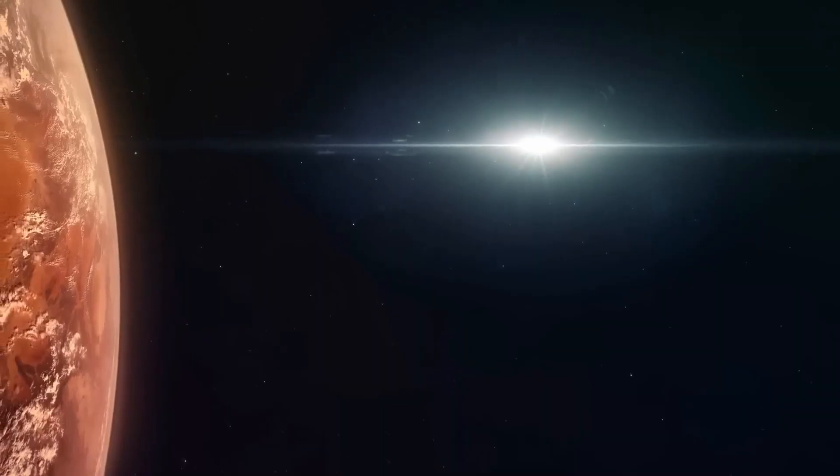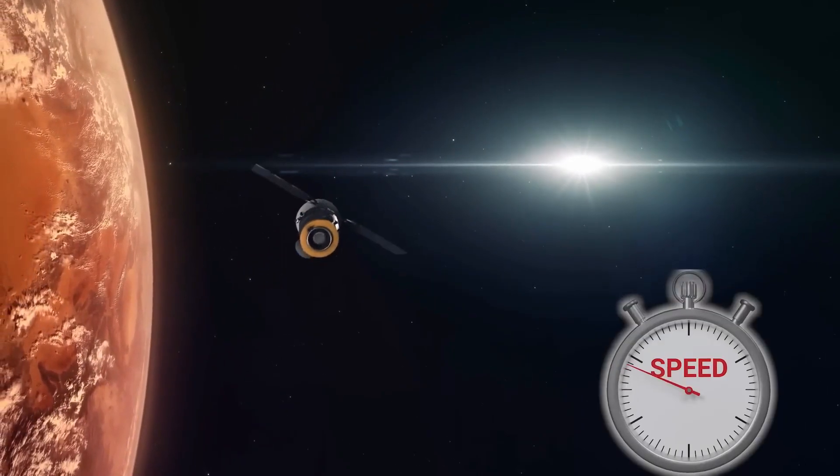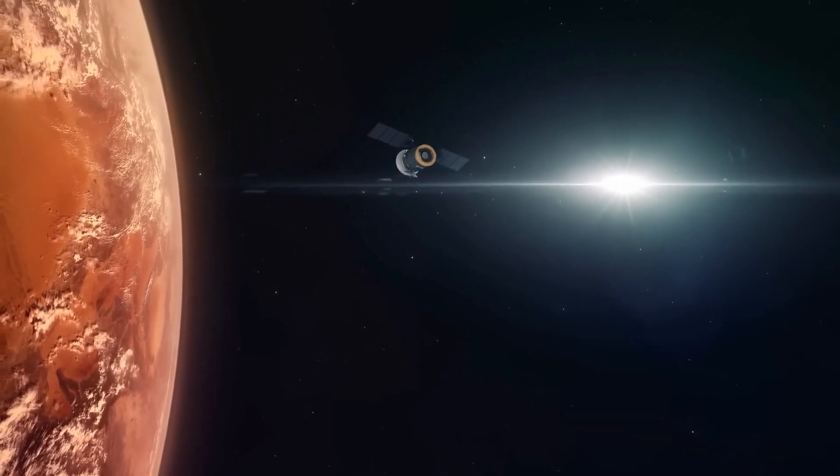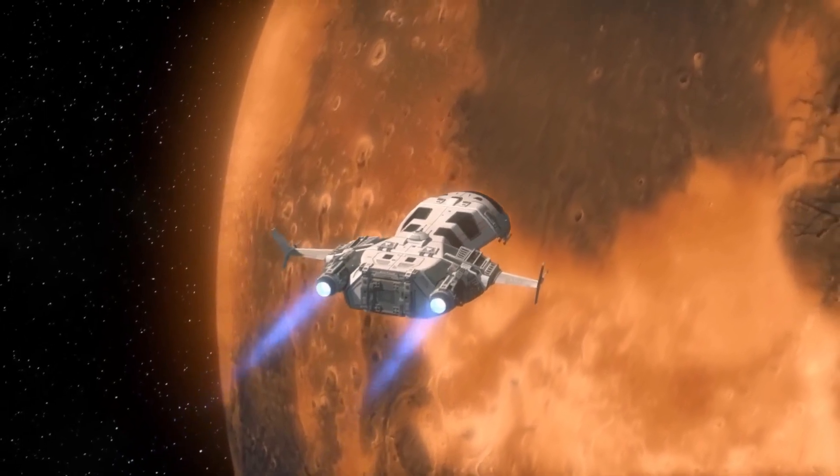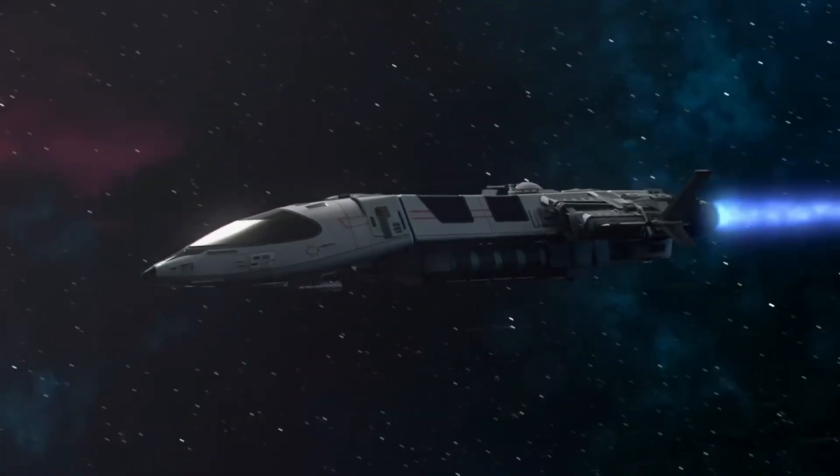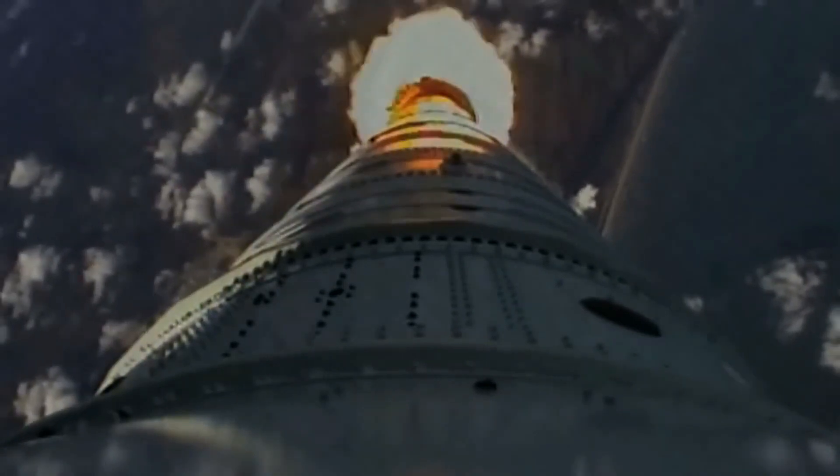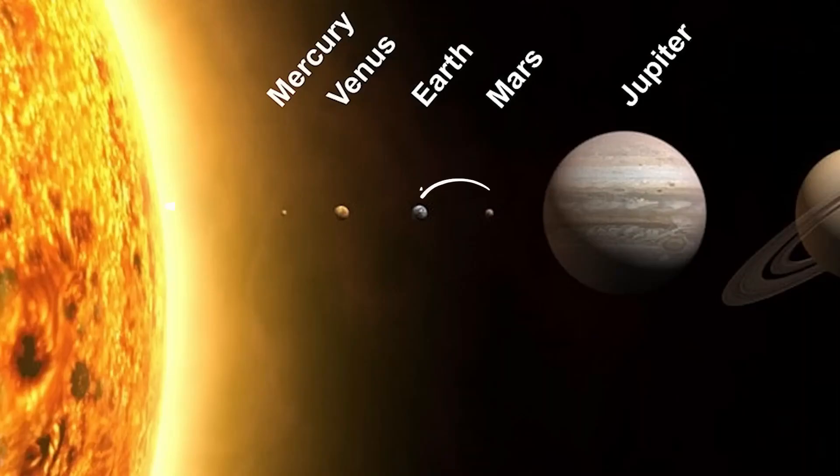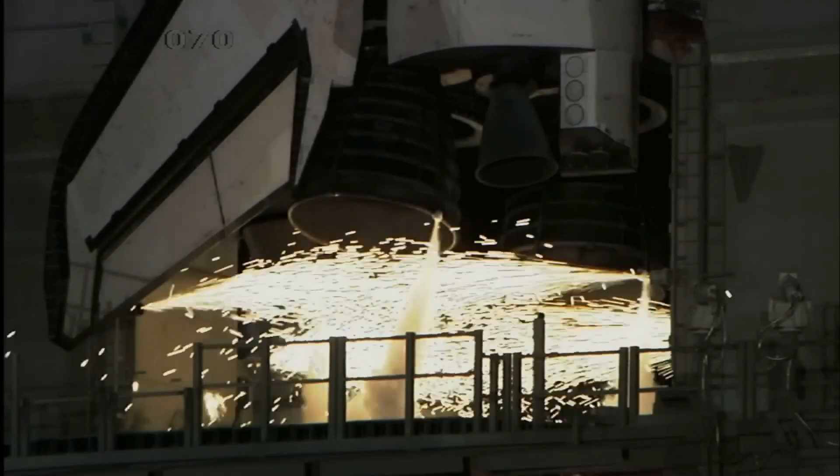To bring a satellite back to Earth from its orbit, its speed needs to be reduced so that Earth's gravity can pull it back. Similarly, if a satellite needs to be sent to another planet, its speed needs to be increased so that it can escape Earth's orbit. In the case of Mars, for example, a spacecraft is first launched into Earth's orbit using a rocket, and then at the right time, angle, and speed, it is propelled out of Earth's orbit. Extracting a spacecraft from Earth's orbit requires a significant amount of energy.